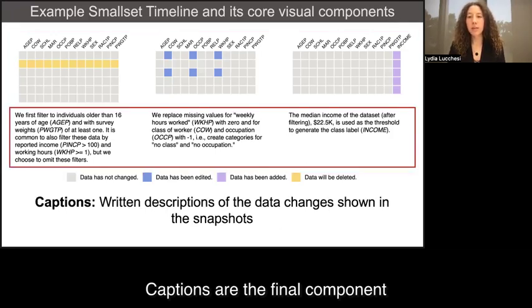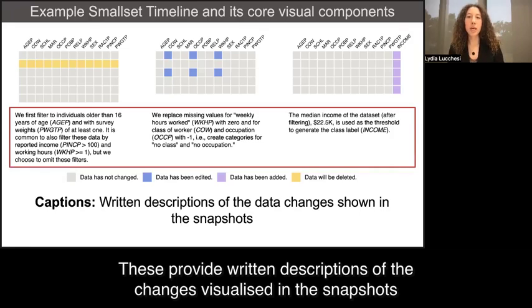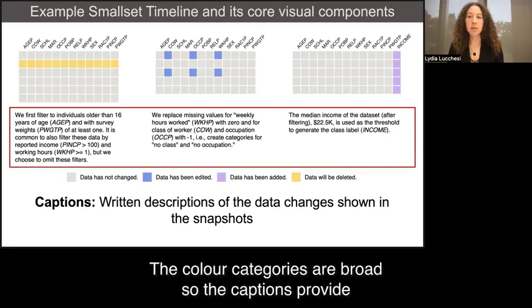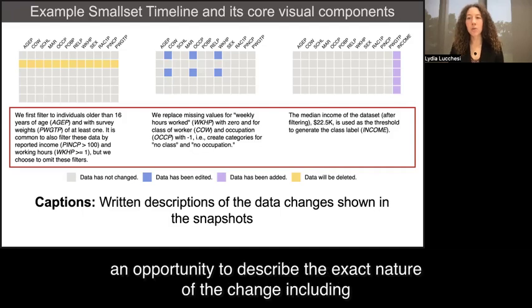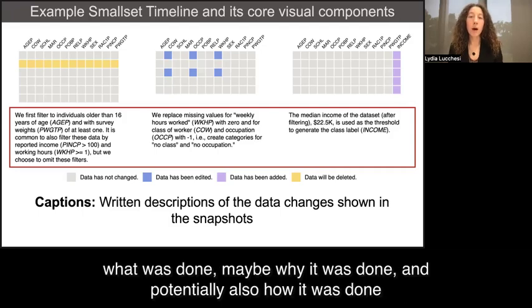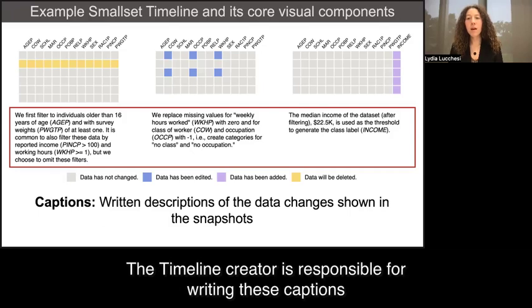Captions are the final component. These provide written descriptions of the changes visualized in the snapshots. The color categories are broad, so the captions provide an opportunity to describe the exact nature of the change, including what was done, maybe why it was done, and potentially also how it was done. The timeline creator is responsible for writing these captions.